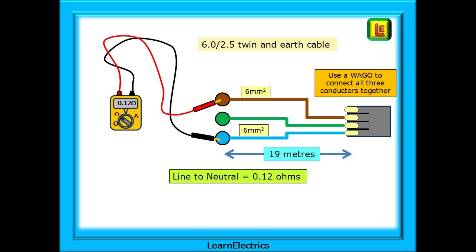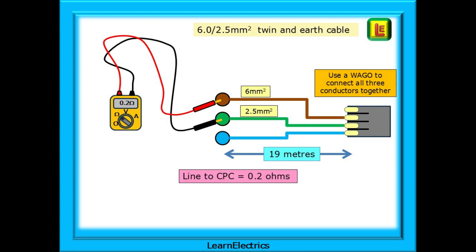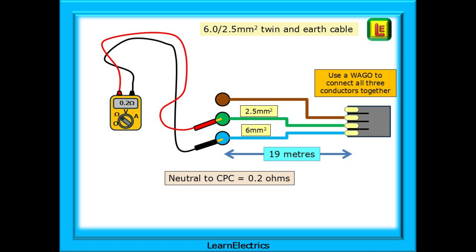Now we can low ohms measure between line and neutral, all at the consumer unit. In this example we have a measurement of 0.12 ohms. Here we are using 6x2.5 twin and earth cable and at 19 metres the low ohms resistance reading between the line and CPC returns 0.2 ohms. We would expect this as the CPC has a smaller cross-sectional area than the line and neutral and will therefore have a higher resistance. The neutral to CPC resistance check should be the same as the line to CPC — a reading of about 0.2 ohms.